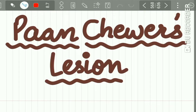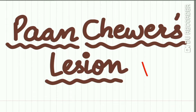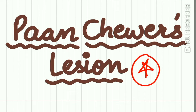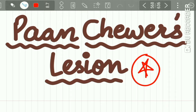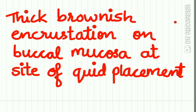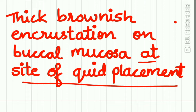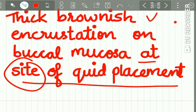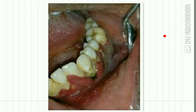Next comes the panchewa's lesion. You should know what panchewa's lesion is, because in clinical practice you come across this lesion quite often, and it is also asked in your exam. Panchewa's lesion is a thick brownish encrustation on the buccal mucosa at the site of quid placement — where the patient places the tobacco quid, there appears a thick brownish encrustation. This is called panchewa's lesion.